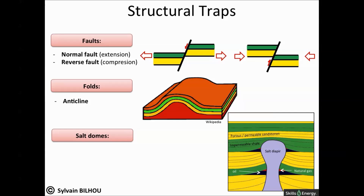Domes are due to low-density ductile rocks, such as salt, rising into the subsurface. As shown on the figure, oil can be trapped in such structures. Structural traps are more easily delineated and more prospective than their stratigraphic counterparts, with the majority of petroleum reserves being found in structural traps.